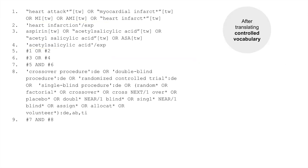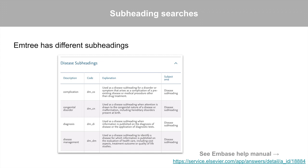Here's the search strategy after translating the controlled vocabulary. Does your PubMed strategy use subheading searches? EmTree has different subheadings from the MeSH system. To see the available subheadings and their codes, refer to the Embase help manual.